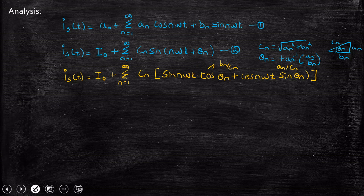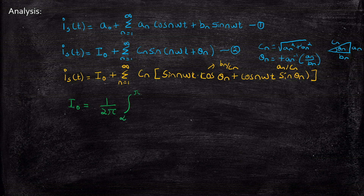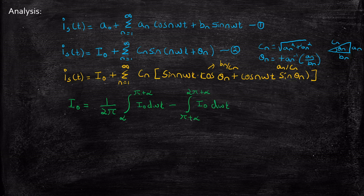Let us start with finding I_out. I_out is nothing but one by the total time period (which is 2pi) integrated from alpha to pi plus alpha of I_out d(omega·t), minus the integral from pi plus alpha to 2pi plus alpha. The source current waveform is positive for some time and negative for some time. When further simplified, this term equals zero — so the DC component I_out is zero.